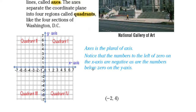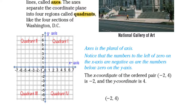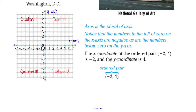If we take a look at an example, the x-coordinate of the ordered pair negative two, four is negative two, and the y-coordinate is four. Negative two, four is called an ordered pair. It is called an ordered pair because it is in order — the first number will always be the x-coordinate and the second number will always be the y-coordinate, x and y respectively.